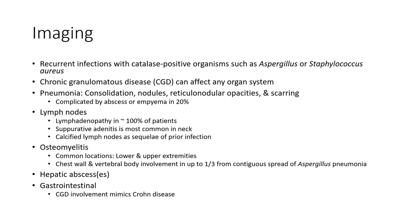Osteomyelitis: common locations include the lower and upper extremities, chest wall, and vertebral bodies. One-third result from contiguous spread of Aspergillus pneumonia. Hepatic abscess is also commonly seen.